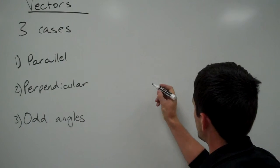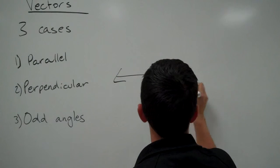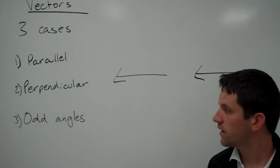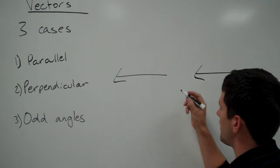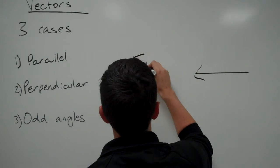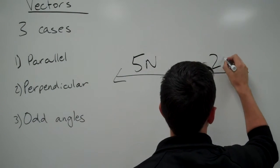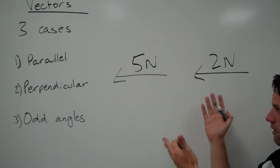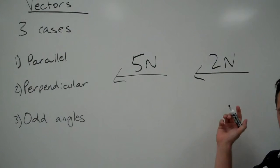The first one: if we're looking at vectors that are parallel, parallel means they're going in the same direction. These two vectors are parallel. If I gave them each a magnitude, like say a 5 newton vector and a 2 newton vector, we have these two different vectors going in the same direction.